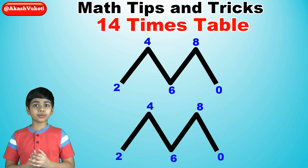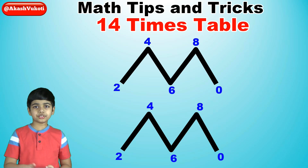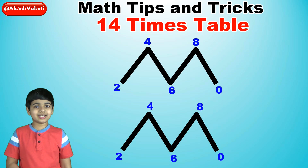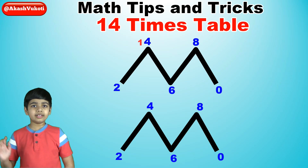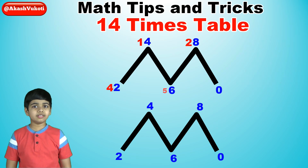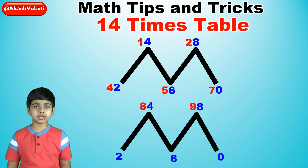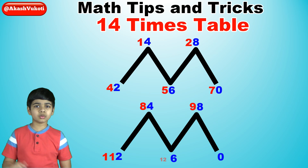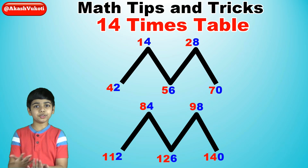Now we'll work on the 10s digits. We will write the numbers from 1 to 14 horizontally throughout the M's, skipping the numbers 3, 6, 10, and 13. So 1, 2, skip the number 3, so 4, 5, skip the number 6, so 7, 8, 9, skip the number 10, 11, 12, skip the number 13, 14. And there you have it.